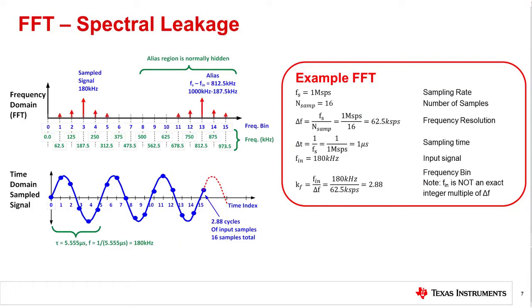This slide shows what happens when the input frequency is not an exact multiple of the sampling frequency. In this case, all the math is the same except that the input frequency is changed from 125 kilohertz to 180 kilohertz. Calculating the frequency bin for 180 kilohertz gives a frequency bin of 2.88, so it's close to 3, but not exactly 3.